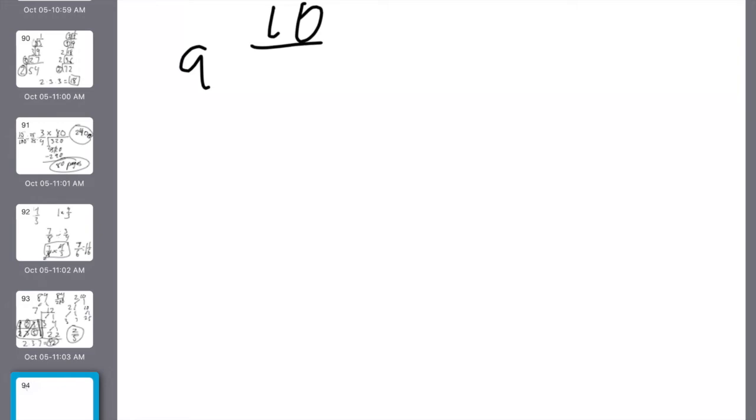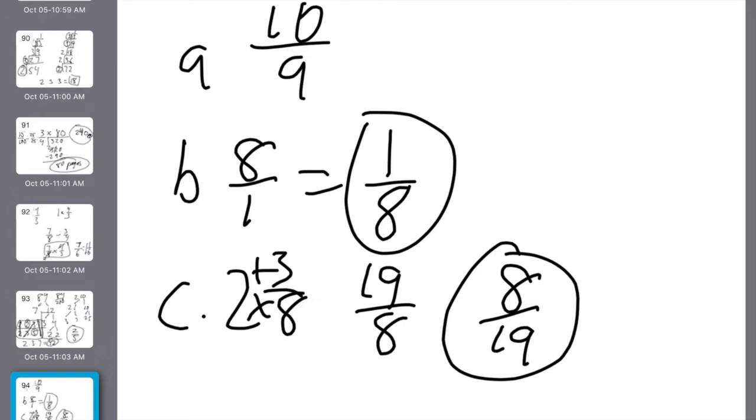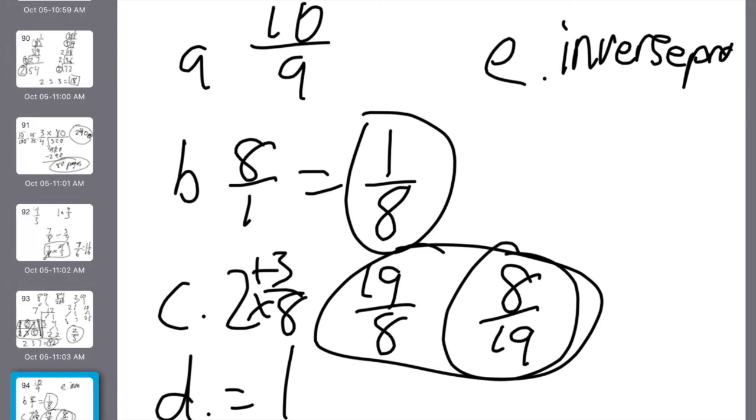Number 10, write the reciprocal of each number. So I take nine-tenths and I flip it to 10 over nine. B, I take eight. Eight is literally written like this. So the reciprocal is one-eighth. C, we're practicing reciprocals of two and three-eighths. Make improper. 16 plus three is 19 eighths. Then reciprocal, eight-nineteenths. That's good practice of that. Do not just flip the three-eighths, guys. That'll get it wrong. D, what is the product of two and three-eighths and the reciprocal? Any number times its reciprocal equals one. E, what rule do you know about reciprocals that could help you answer D? I know the inverse property. That's what the rule is. Any number times its reciprocal equals one.